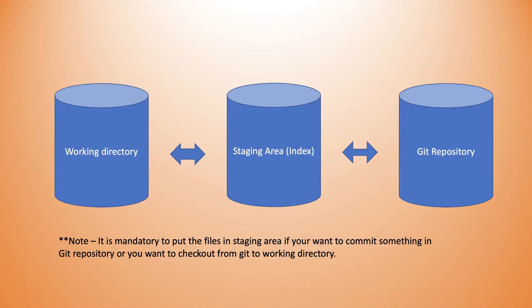In this session we'll discuss more on working directory, staging area, and git repository. Working directory is nothing but the local repository where we are currently working. For instance, if you are working on your C drive where you have some code and you've made some changes that you want to push to the git repository, that local location is the working directory — where you're currently working for a particular project. That is, in short, called the working directory.